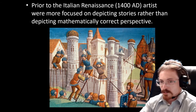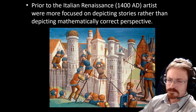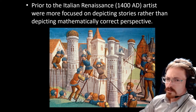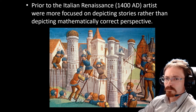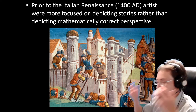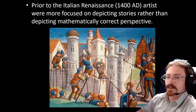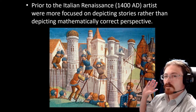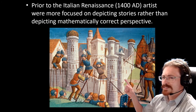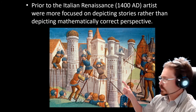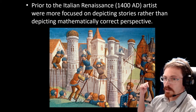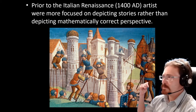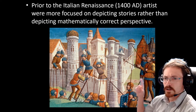For instance, in this artwork right here, it tells the story of an invading army — pretty straightforward. Now, if this city were actually drawn to correct proportion, these people would be massive. They would be 30, 40 feet tall.